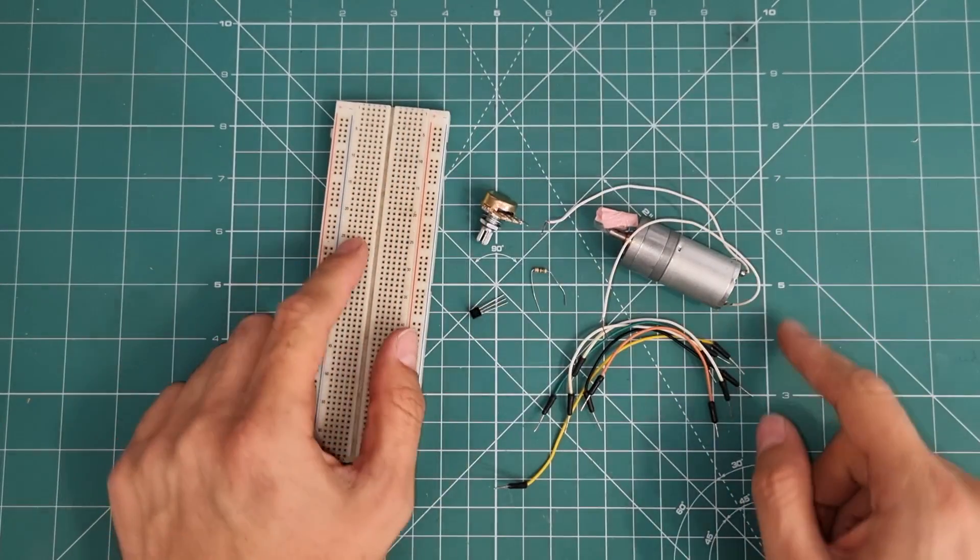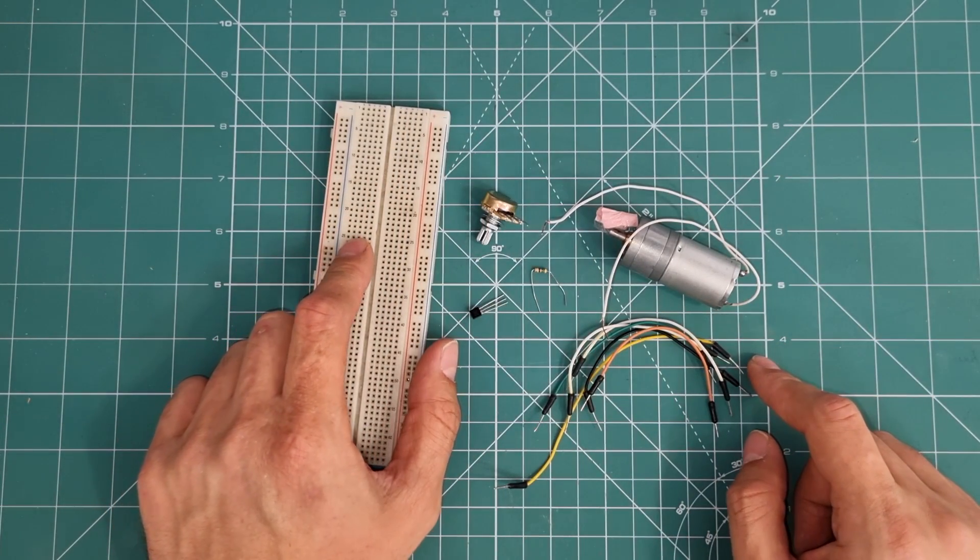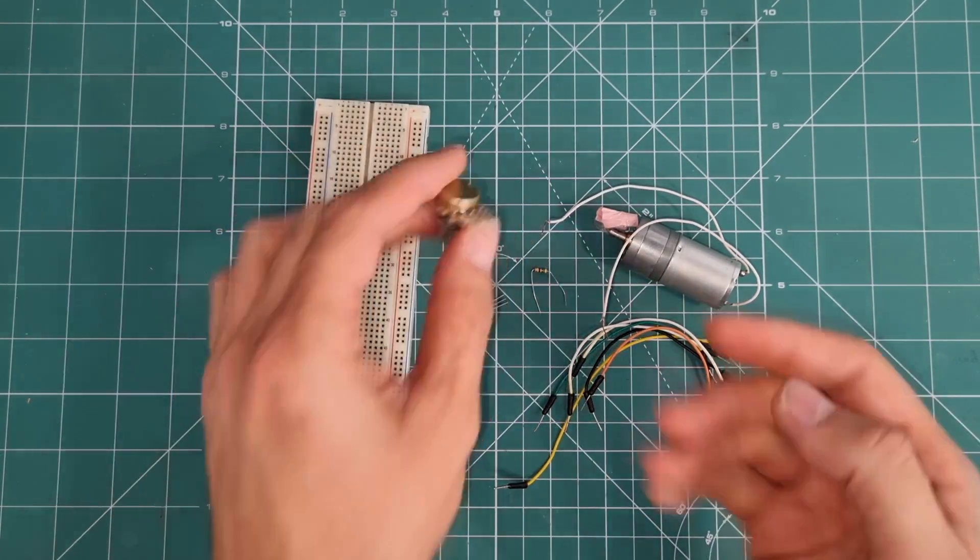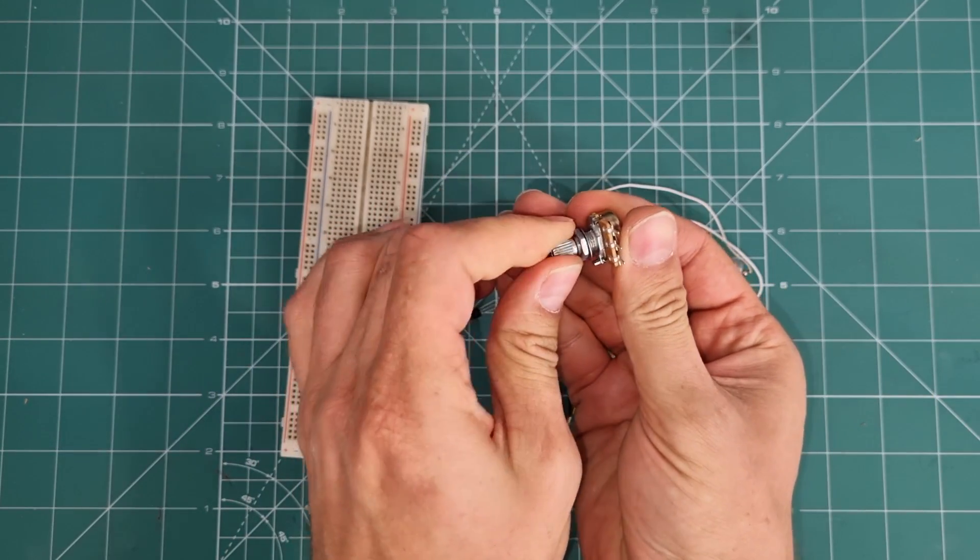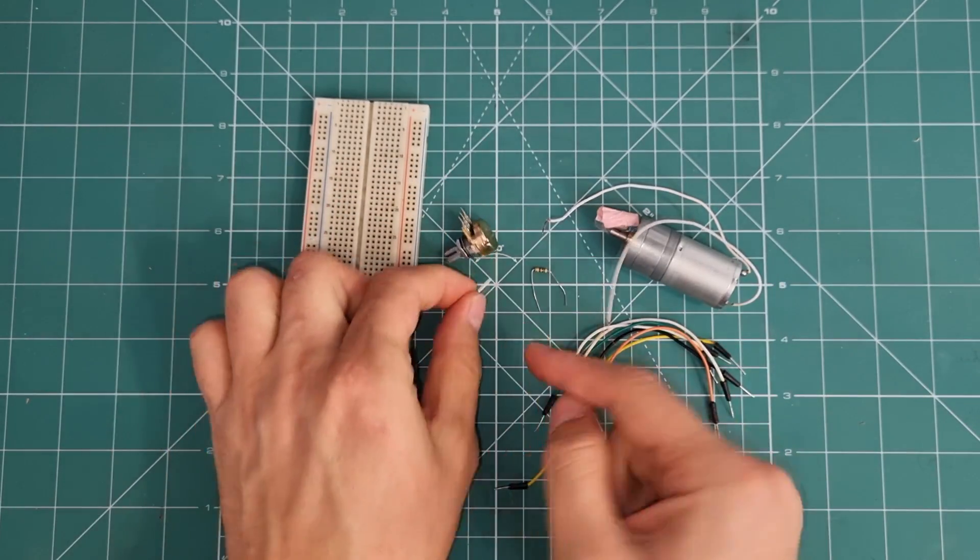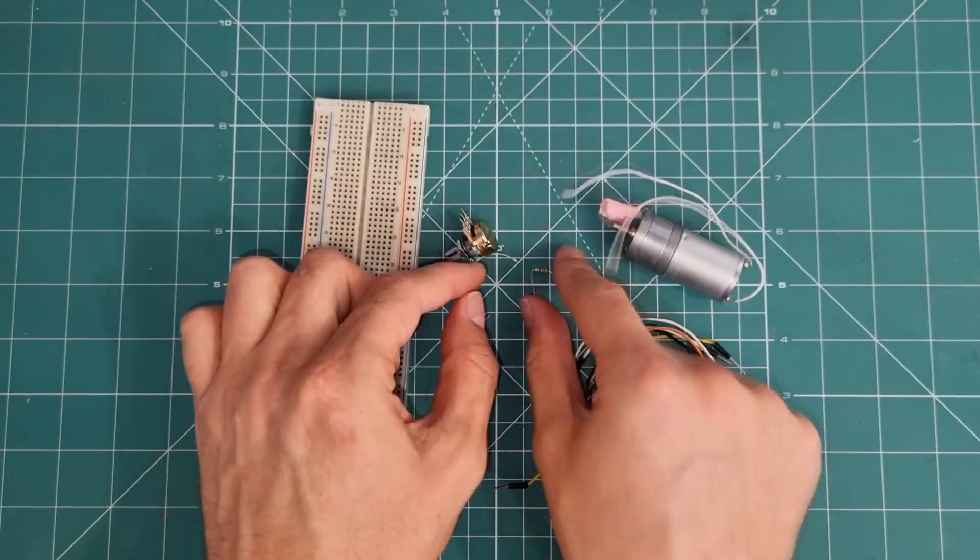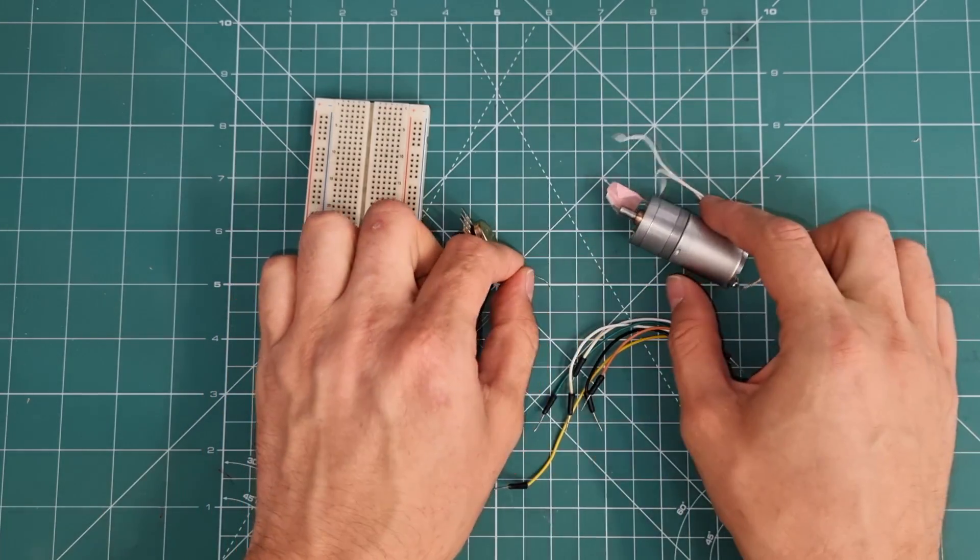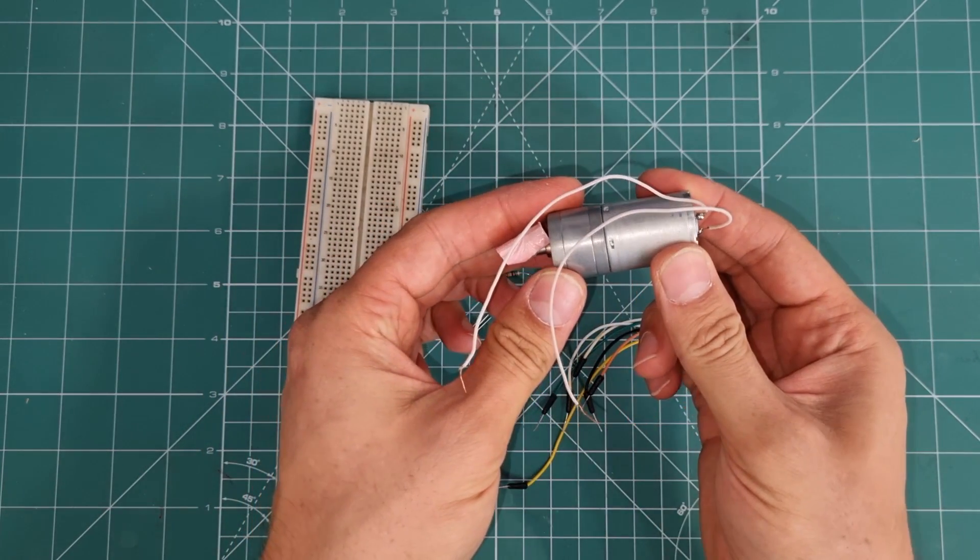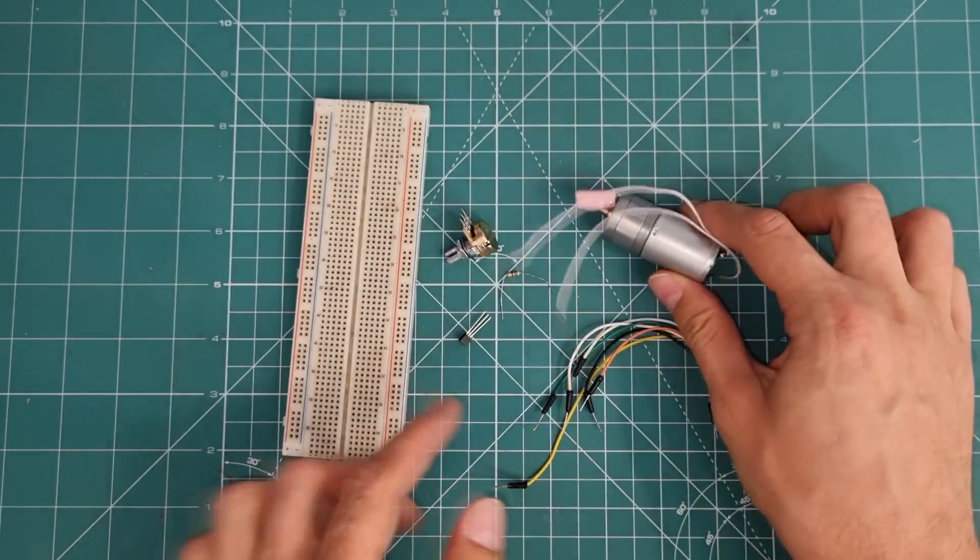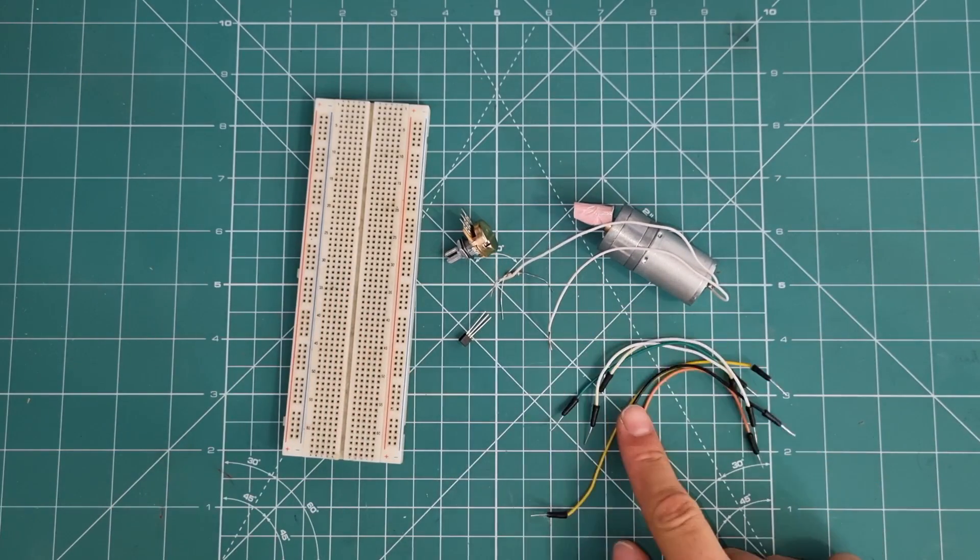These are components we need to set up a simple DC motor speed controller. This is a potentiometer, this is a transistor, this is a simple resistor, and this is a DC gear motor. Also we need a breadboard and some jumper wires.